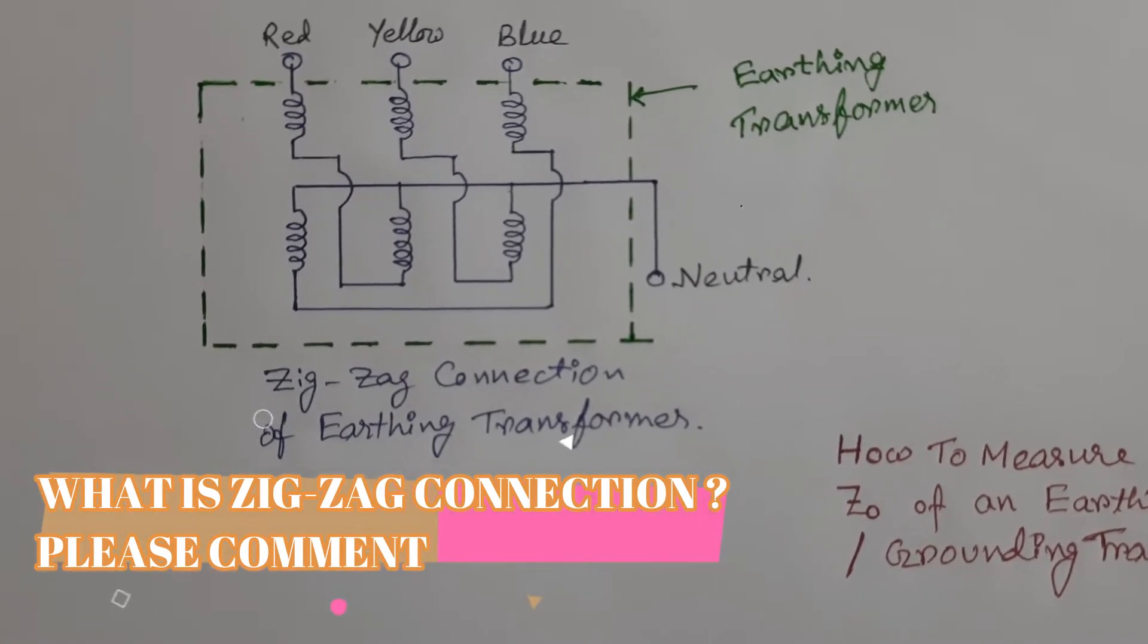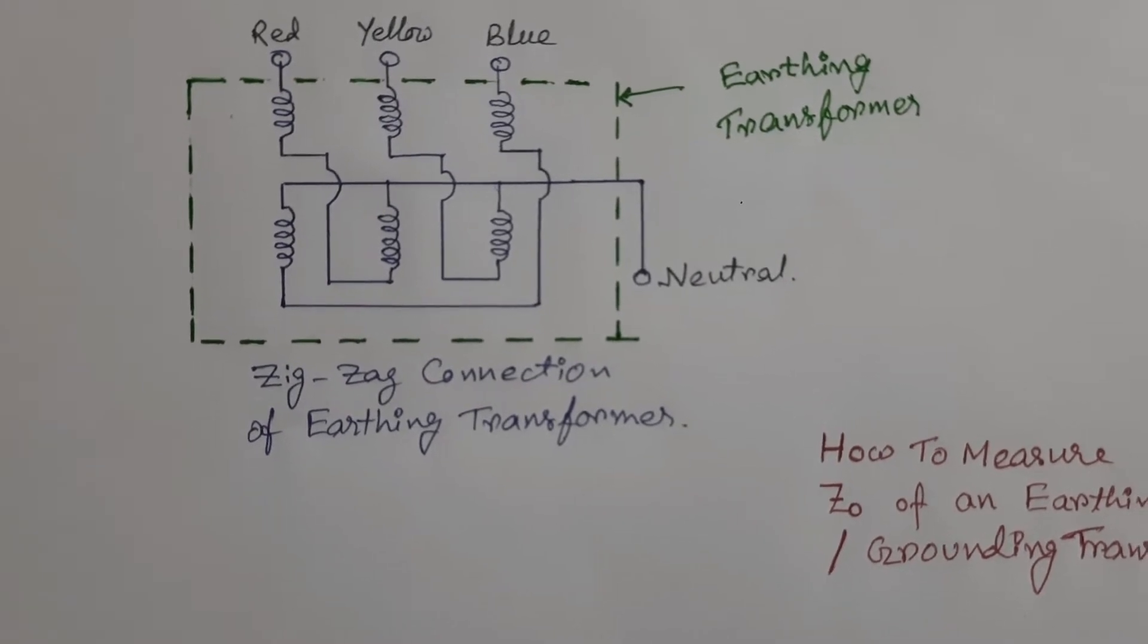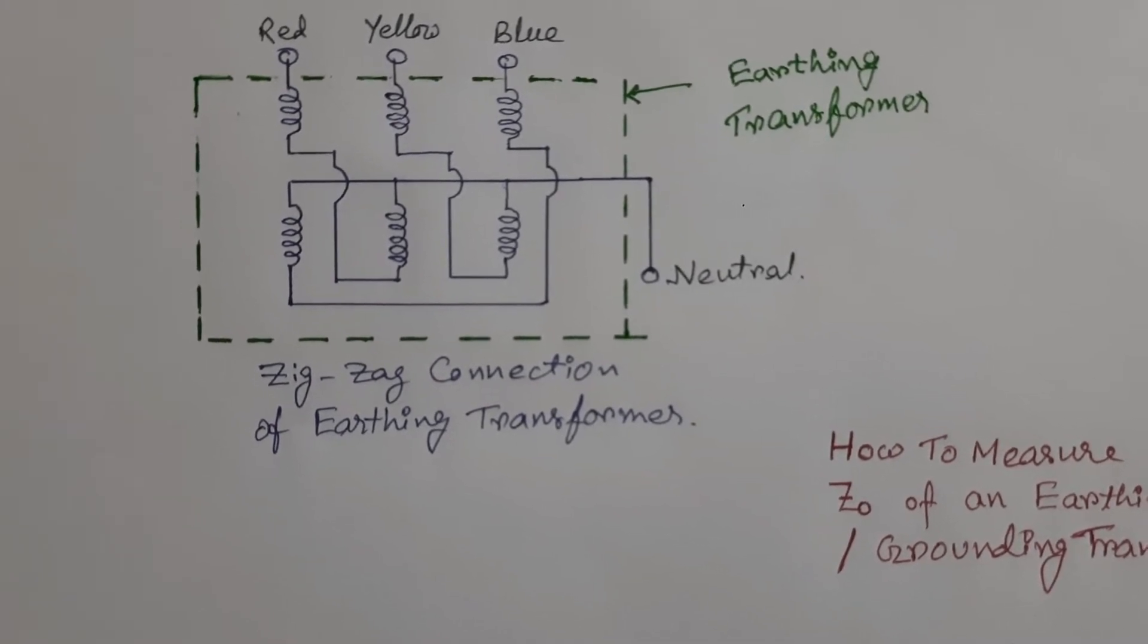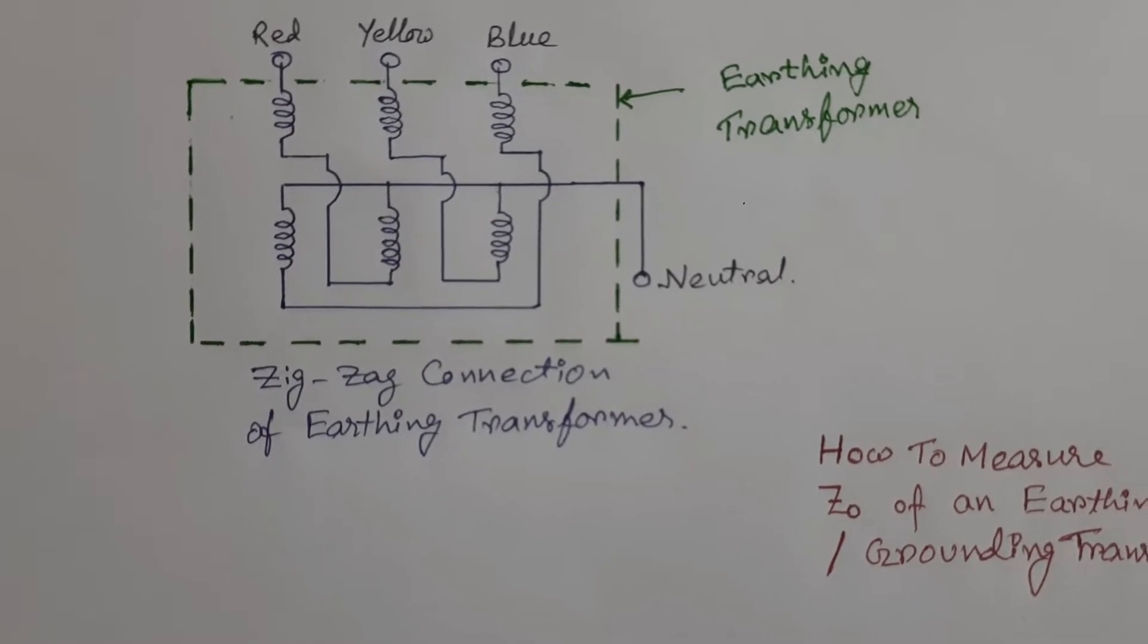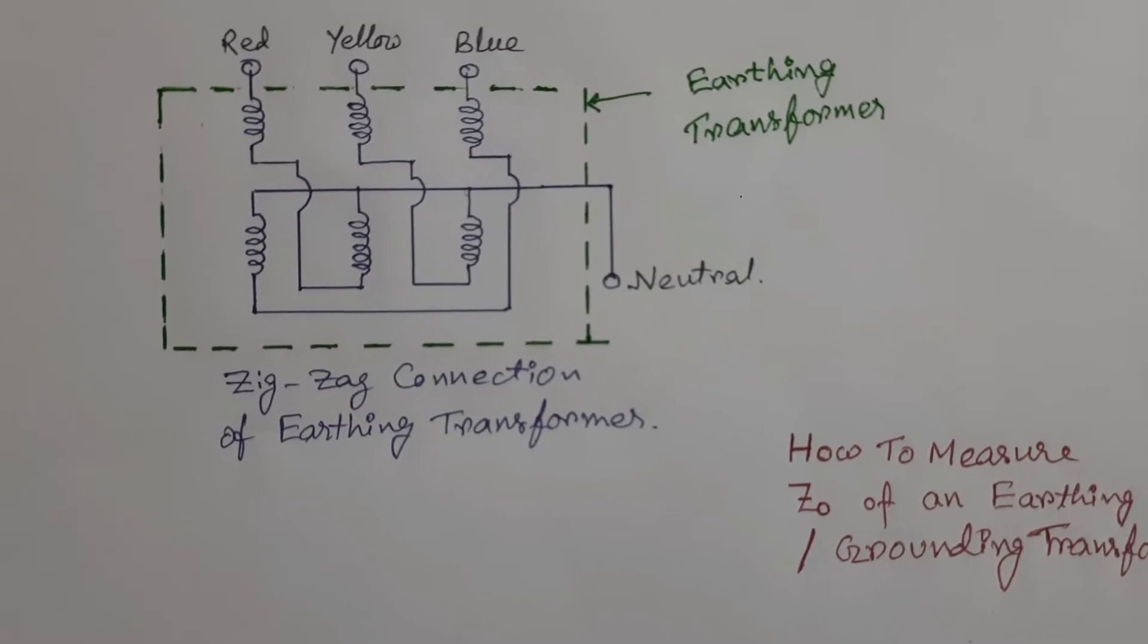To measure zero sequence impedance, we should apply zero sequence voltage. As a result, there will be zero sequence current which will flow through each phase of earthing transformer.